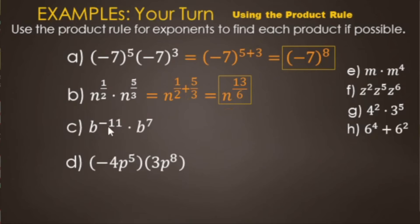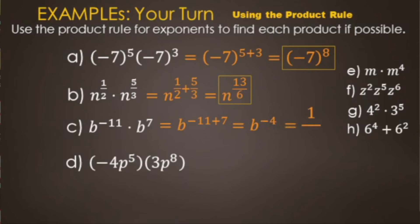Letter C: we have b to the negative eleven times b to the seventh. Same base, so we add the exponents: negative eleven plus seven. Thinking of it like money — if you owe $11 but only have $7, you still owe more than you have. So we get b to the negative four. If the instructions say no negative exponents, rewrite it as one over b to the fourth power. Pay attention to the instructions.